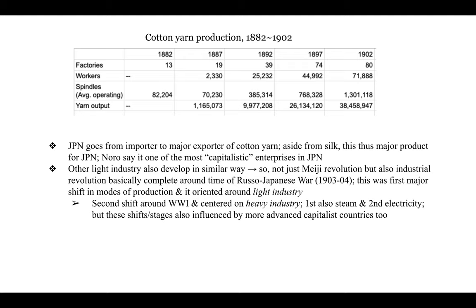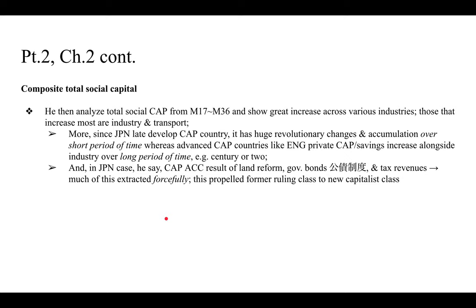Not just the Meiji revolution but also the industrial revolution was basically complete around the time of the Russo-Japanese War around 1903 to 1904, which was the first major shift from light to heavy industry — though this shift really occurred around World War One. Noro analyzes total social capital from Meiji 17 to Meiji 36, showing great increases across all industries, indicating Japan had become a major capitalist player extracting surplus value through labor-intensive means. The industries where capital increased most were manufacturing including light industry, and transport.